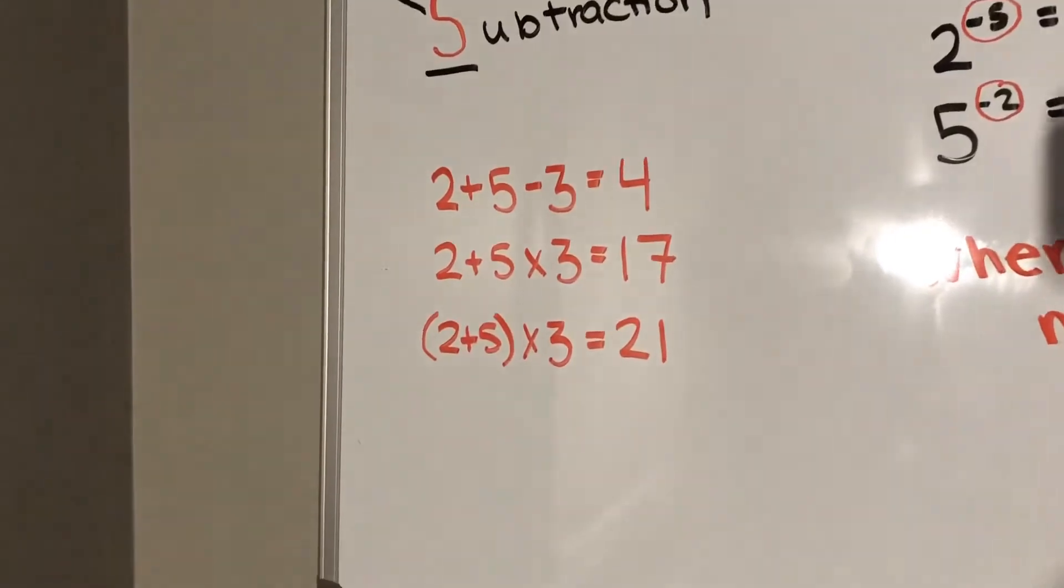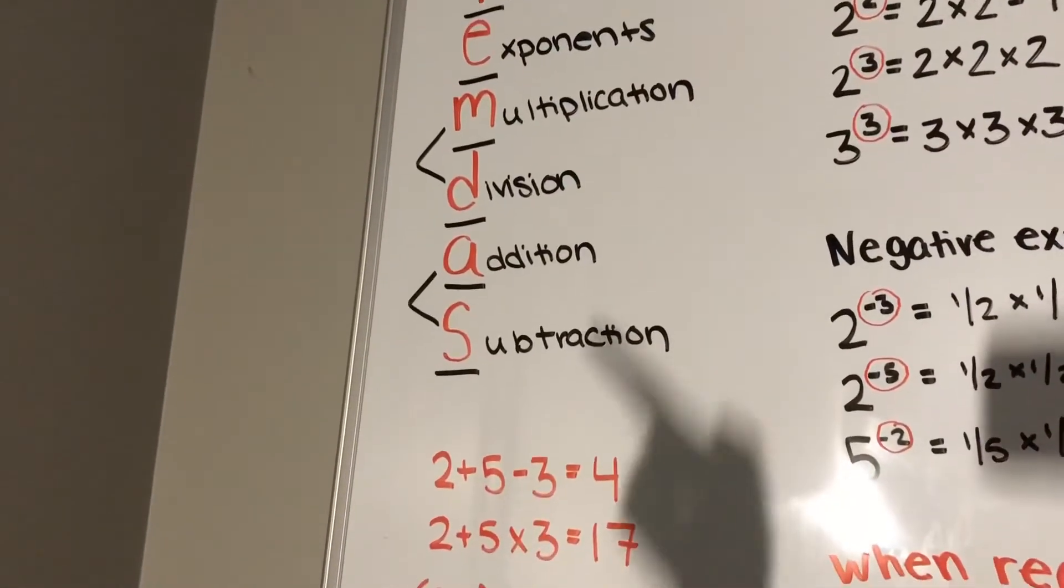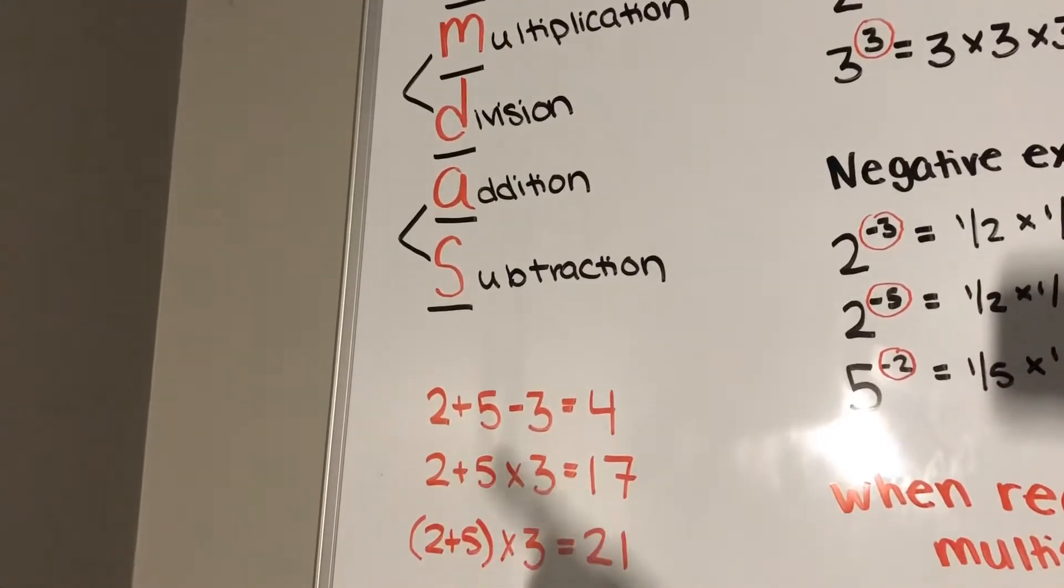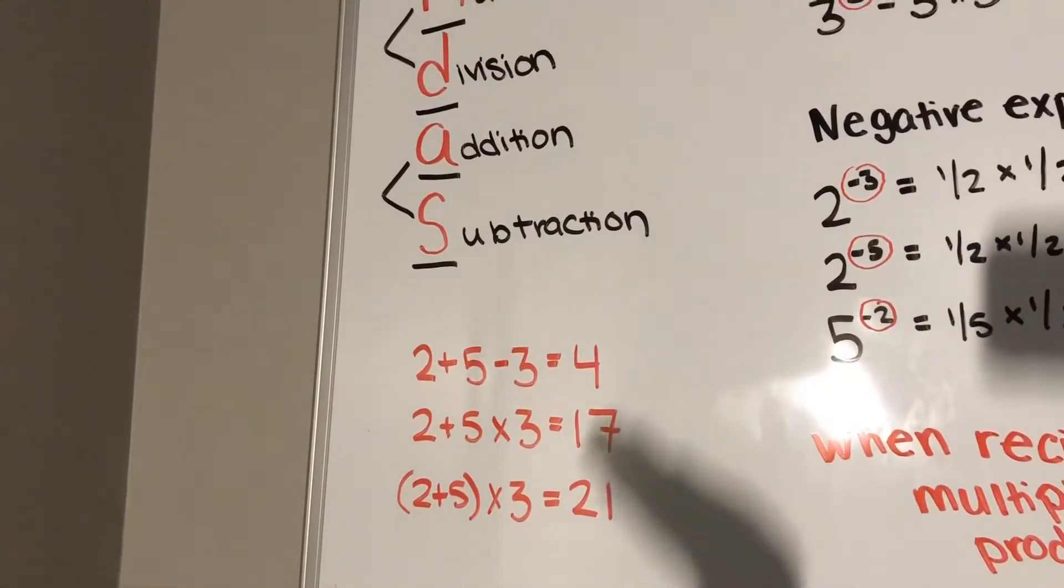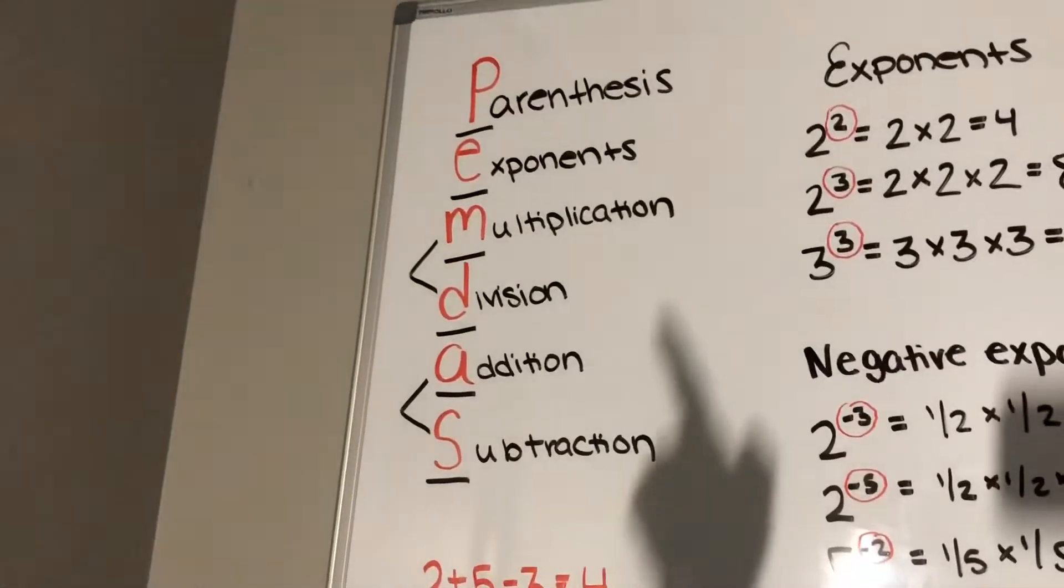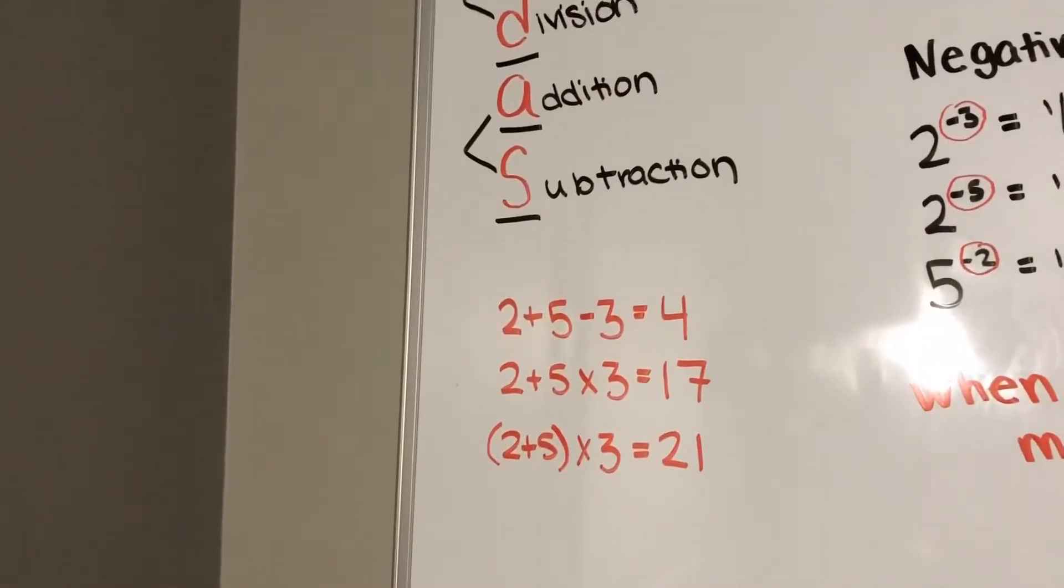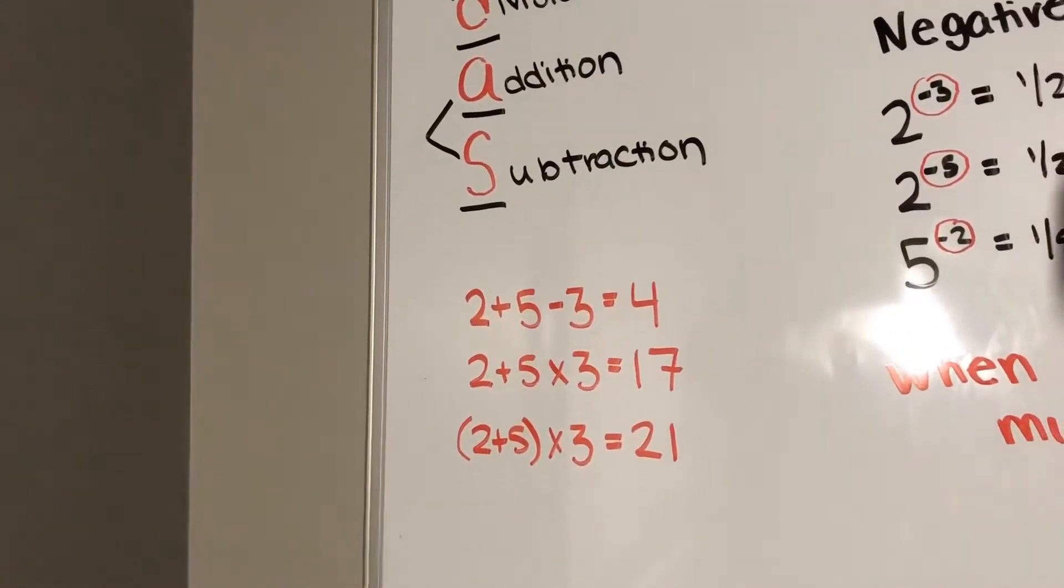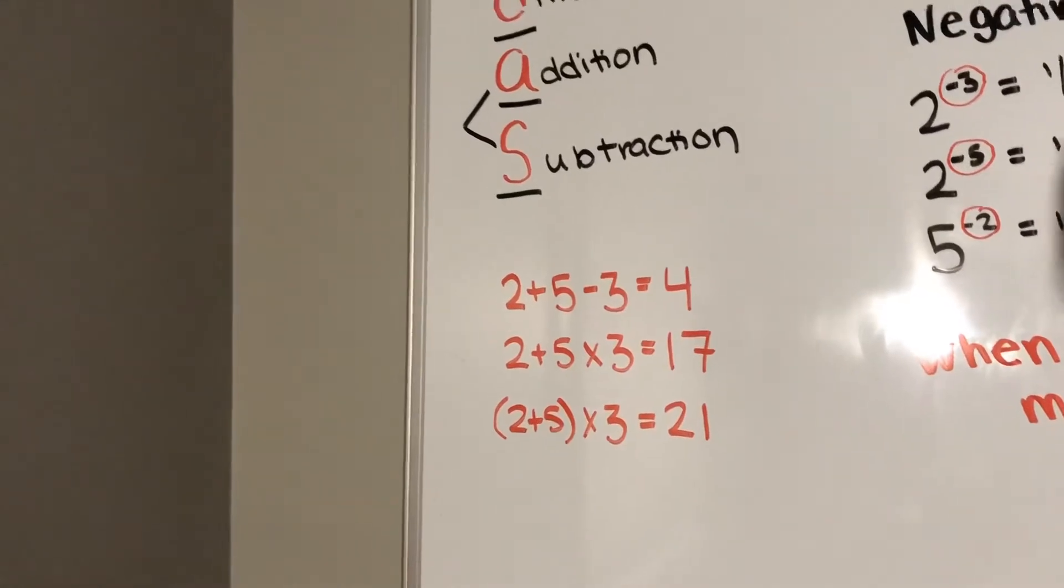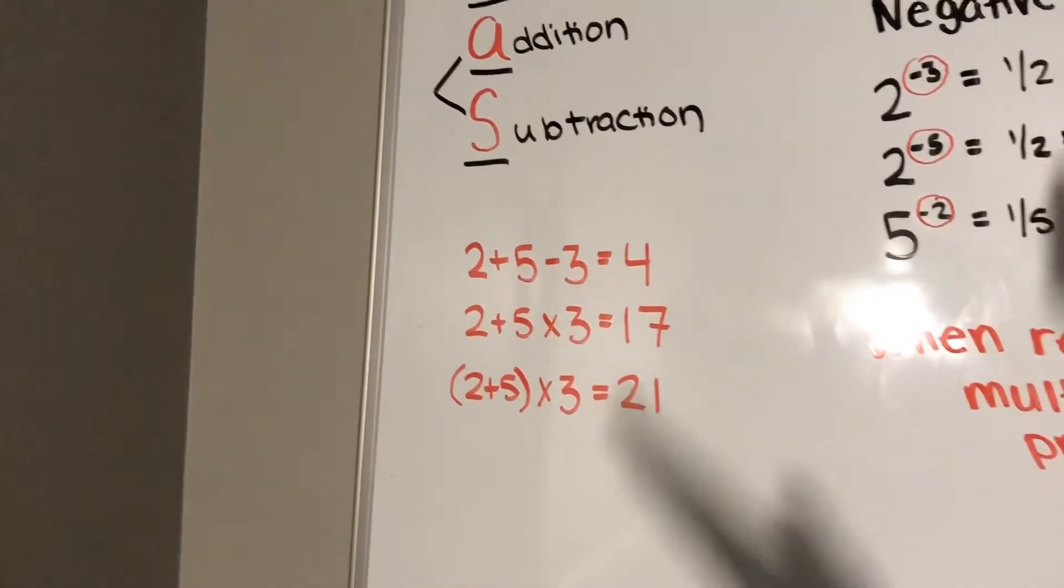Here we have 2 plus 5 minus 3. Addition or subtraction, whichever comes first, so you would do 2 plus 5, which equals 7 minus 3, and then you get your answer 4. And then this one, you do multiplication first, because it comes before addition, 5 times 3 is 15, plus 2 is 17. And then the last one, you do parentheses first, 2 plus 5, 7 times 3, and then you get your answer 21.